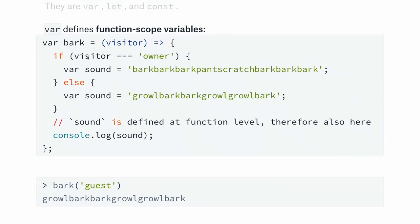For example, in a function called 'bark', I can console.log the value of 'sound' defined inside an if-else and it will work because var is function-scoped. However, let is block-scoped — just like most C-like languages, it only lives from its definition until the end of its block. So if you use let inside an if-block and try to access it after, it will be undefined and you'll get an error in strict mode or modern JavaScript.